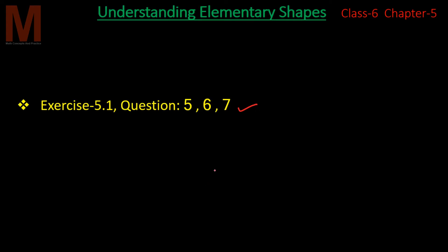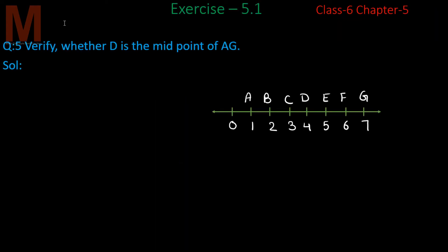Let's start with question 5: Verify whether D is the midpoint of AG. We have to verify that D is the midpoint of AG. We can see the figure — here we have a number line from 0 to 7.